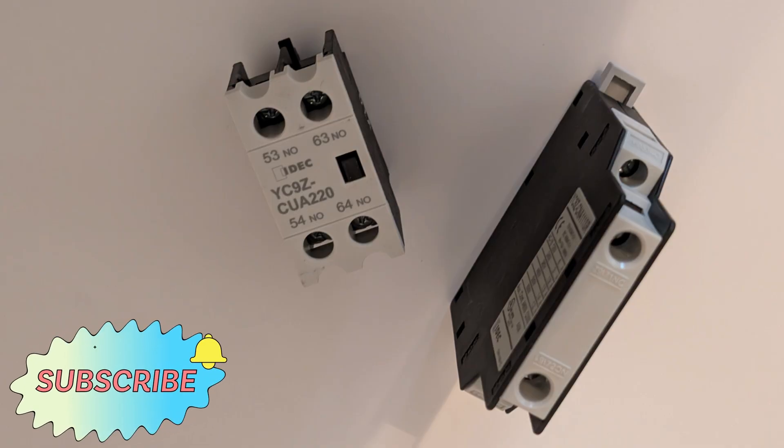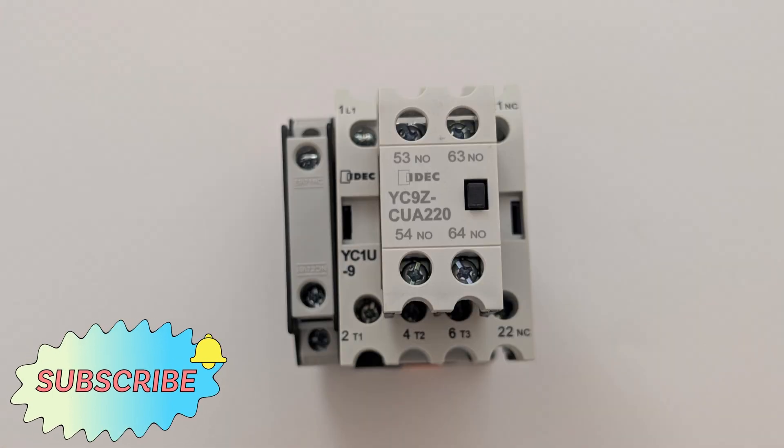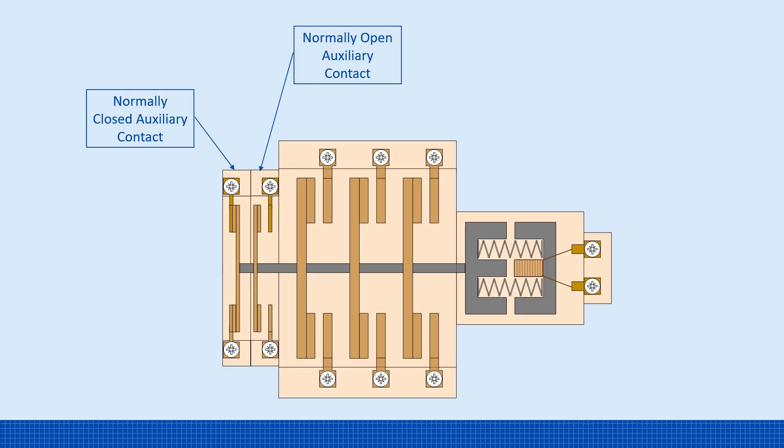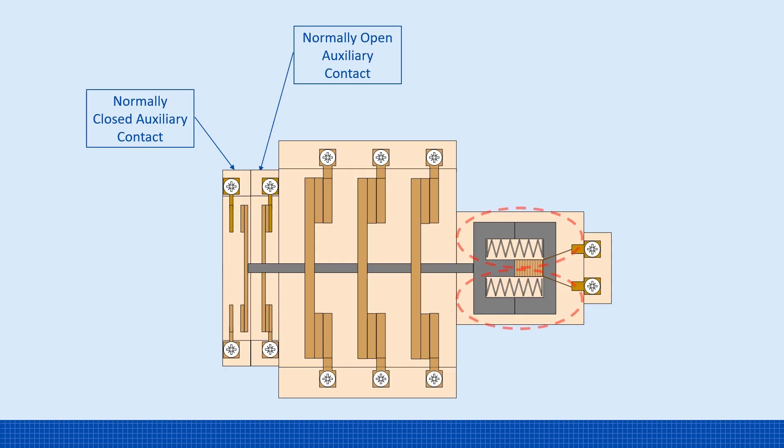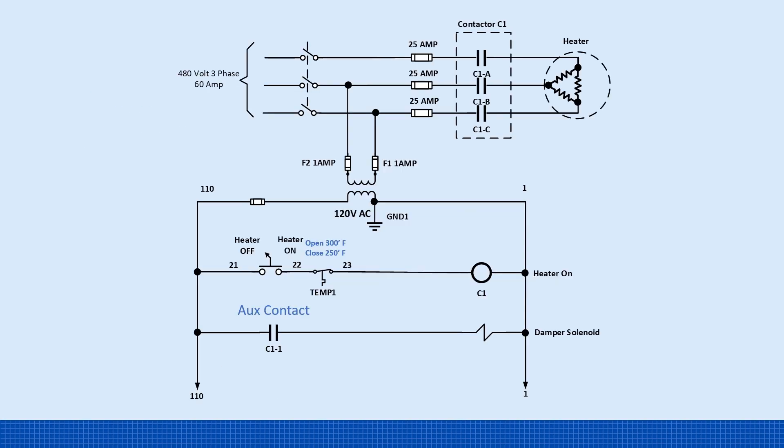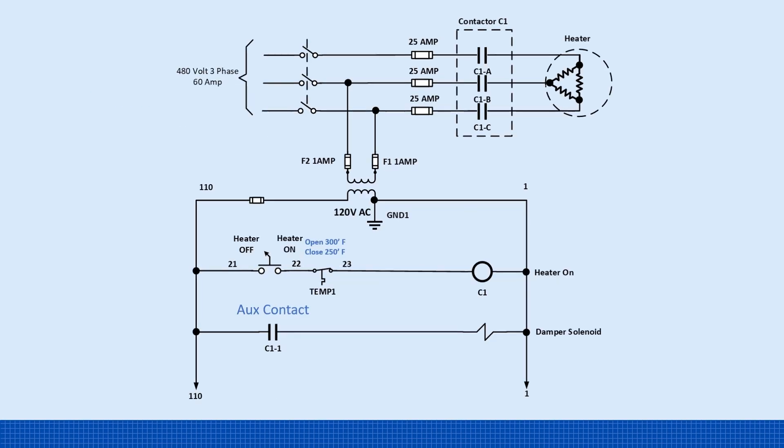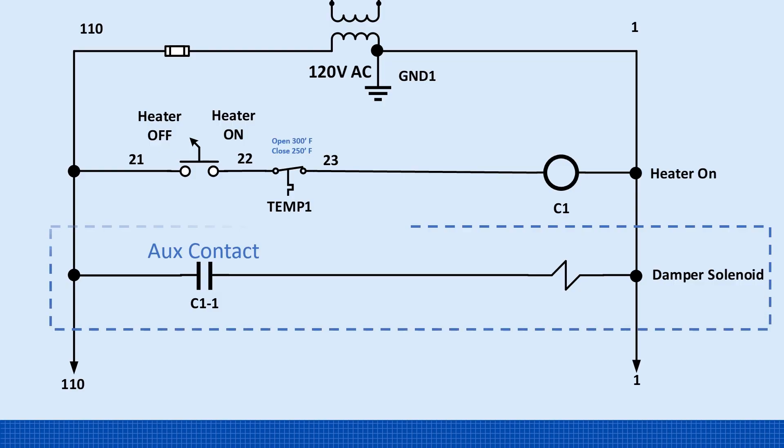So what are auxiliary contacts? Auxiliary contacts are add-on contacts that attach to the contactor. They don't carry the main load. Instead, they're used in the control circuit. Depending on whether they're normally open or normally closed, they will switch when the main contactor is closed. They're commonly used to latch a circuit or as an interlock to trigger other parts of the logic. In our example, when contactor C1 is energized, its auxiliary contact C1-1 also closes. This closed contact completes the circuit and energizes the damper solenoid.